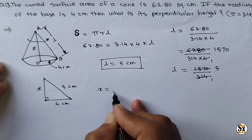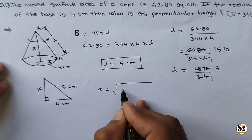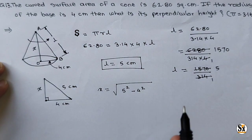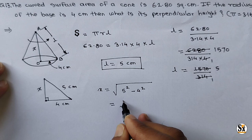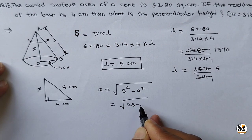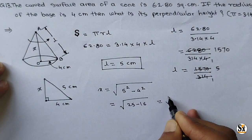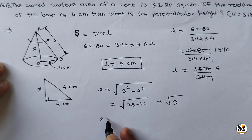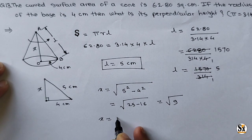So X equal to square root of this 5 square minus this 4 square. Simple formula, just put the values. 5 square is 25 minus 16, we will get square root of 9. The square root of 9 is 3. So X we got is equal to 3 centimeter.